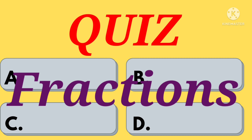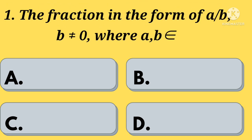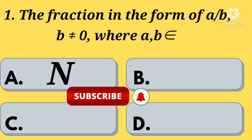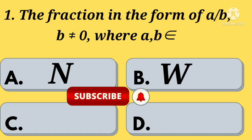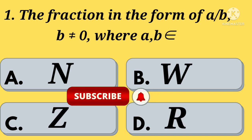First question: the fraction is in the form of A by B, where B not equal to 0, where A, B belongs to — Option A: N. Option B: W. Option C: Z. Option D: R. Your time starts now.